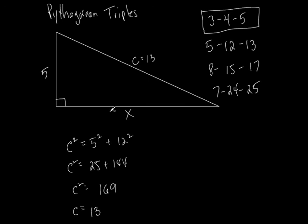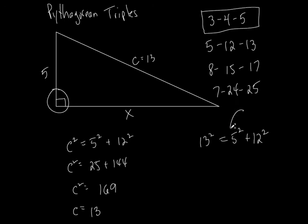What kind of triangles were all of these? Right triangles. So watch — if I took thirteen squared, that should equal five squared plus twelve squared. That works because it's a right triangle. So if I take C — the longest side — and square it, it equals the sum of the squares of the other two sides. That's what defines a right triangle.